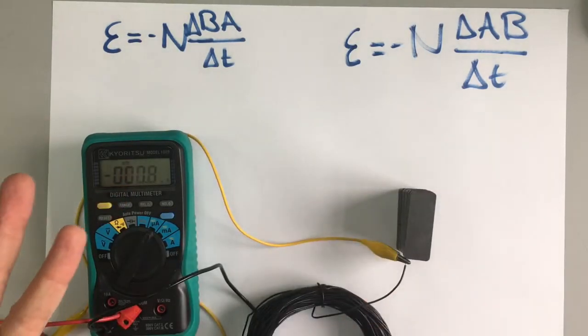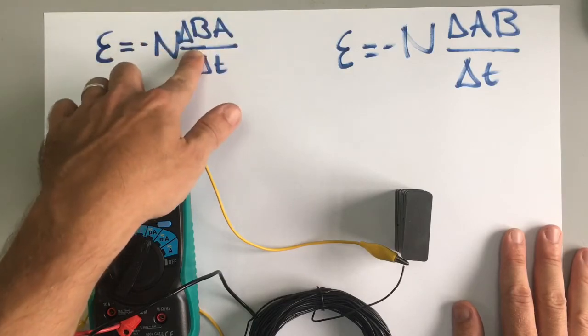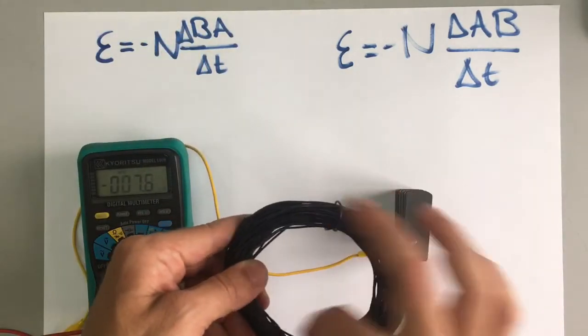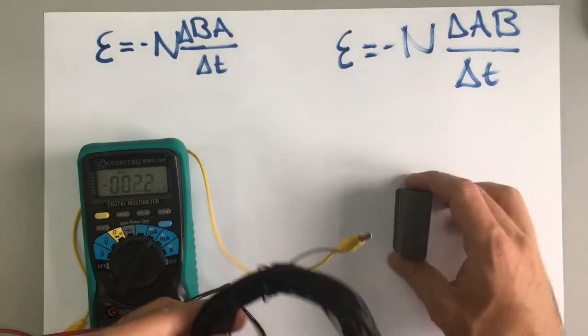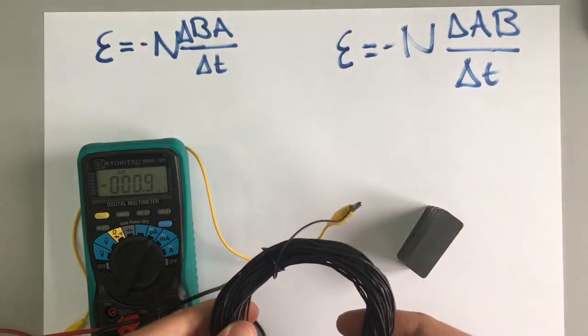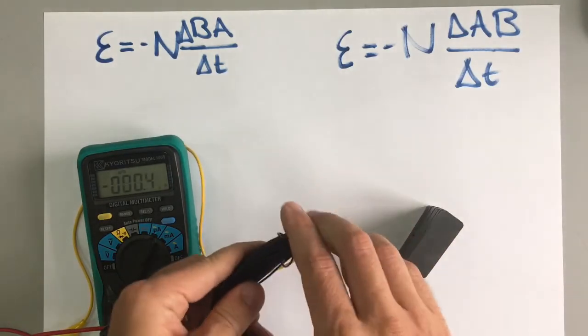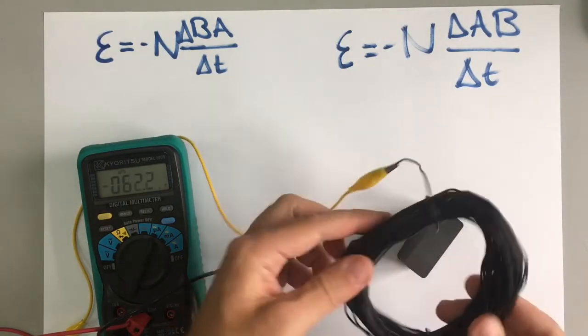So there's three ways to change the flux going through the area of this coil. The first one is to either move the coil or move the magnet. The second way is to change the area of the coil, and the third way is to rotate the coil in some way.